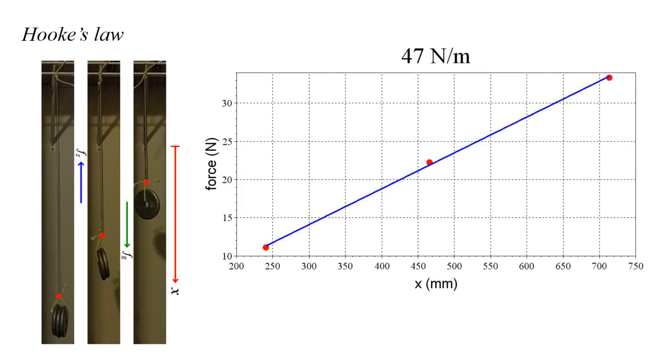Now we plot spring force in newtons versus spring length in millimeters as red dots. We see that the relation between force and displacement is well represented by the blue line. We calculate the slope of this line to be 47 newtons per meter. This is our spring constant.